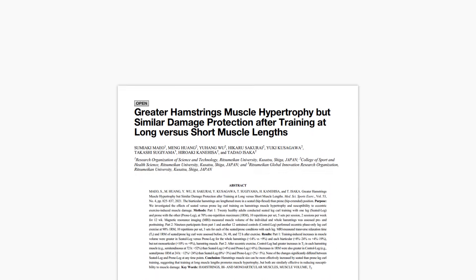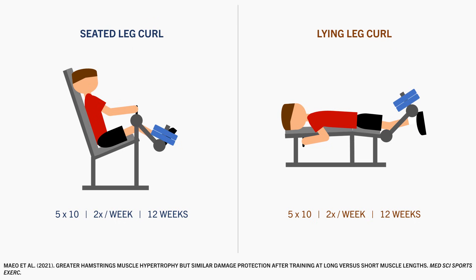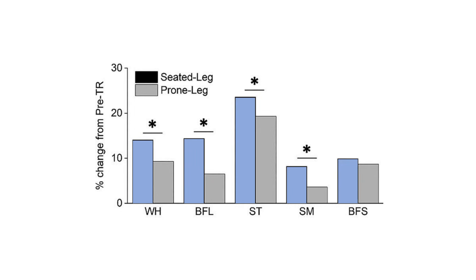For example, one study explored the effects of performing seated versus lying leg curls on hamstrings hypertrophy. Trainees performed the same leg curl training protocol using a seated leg curl with one leg and the lying leg curl with the other leg. Based on the anatomy of the hamstrings muscles, the seated leg curl places the hamstrings in a more lengthened position, while the lying leg curl puts the hamstrings in a shorter position. It was found that the seated leg curl resulted in superior growth of all hamstrings muscles, shown in the blue, compared with the lying leg curl, shown in the orange. The only exception was the short head of the biceps femoris, whose length isn't influenced by hip position.